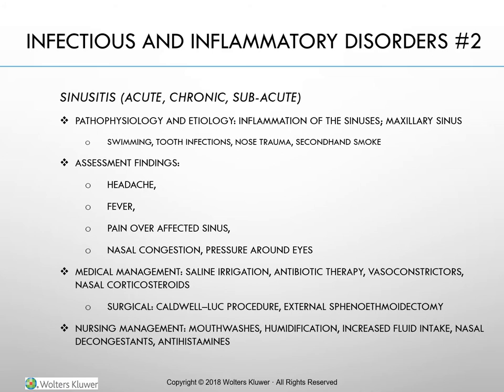The maxillary sinus is affected most often. Sinusitis can lead to serious complications such as infection of the middle ear or brain. The principal causes are the spread of an infection from the nasal passages to the sinuses and the blockage of normal sinus drainage. The infection can be bacterial or viral, generally occurring after an upper respiratory infection or with allergic rhinitis. Interference with sinus drainage predisposes a client to sinusitis because trapped secretions readily become infected.